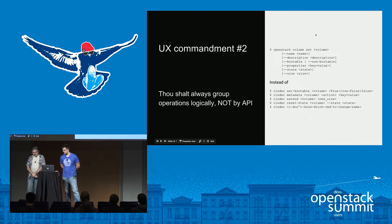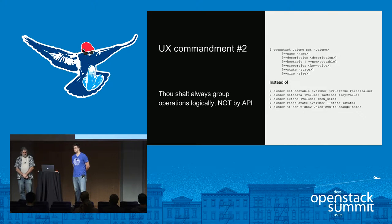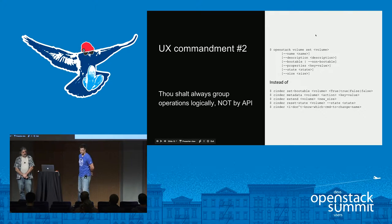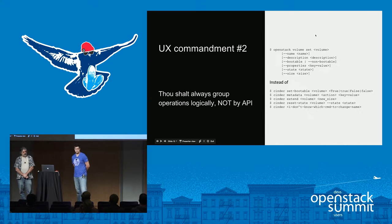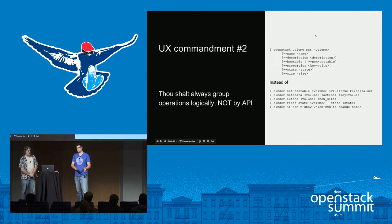Number two: they shall always group operations logically, not by API. Just because a certain API set has five different APIs available doesn't mean you need to represent it to the user as five different things. In this example you can update a volume — you give the volume name or ID, and from there you can update the name, description, whether it's bootable or not, metadata properties, the state, and the size. The Cinder CLI follows a kind of logical developer mindset of one CLI per API: cinder set-bootable, cinder metadata, cinder extend, cinder reset-state — why not just one command?